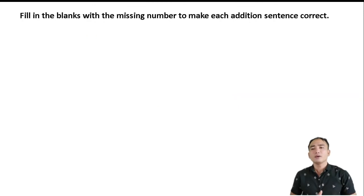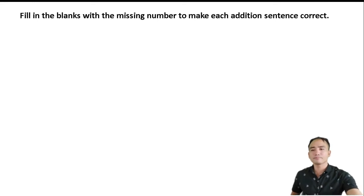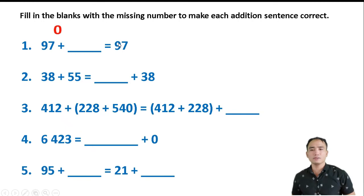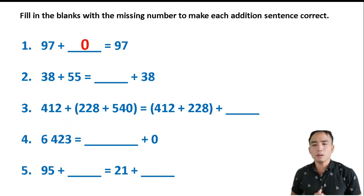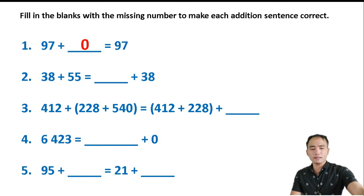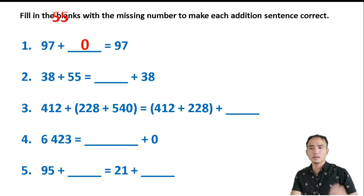Now fill in the blanks with the missing number to make each addition sentence correct. Number 1: 97 plus blank equals 97 — the answer is 0, which is the Zero Property of Addition. Number 2: 38 plus 55 equals blank plus 38 — applying the Commutative Property, the answer is 55.